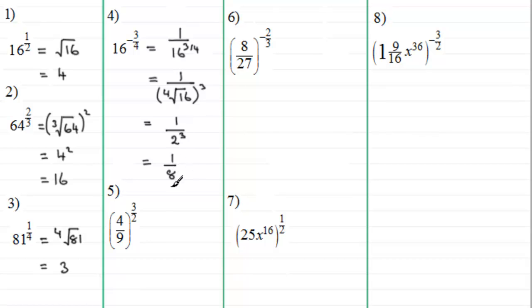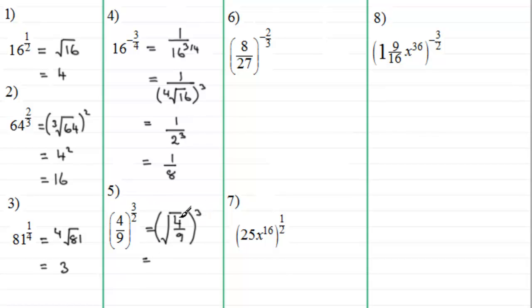Number 5: (4/9) to the power 3/2. The denominator 2 means we first take the square root of 4/9, and then cube the result. The square root of a fraction is the root of the top and root of the bottom, so the square root of 4/9 is 2/3. Then we cube that: 2 cubed is 8 and 3 cubed is 27, giving us 8/27.